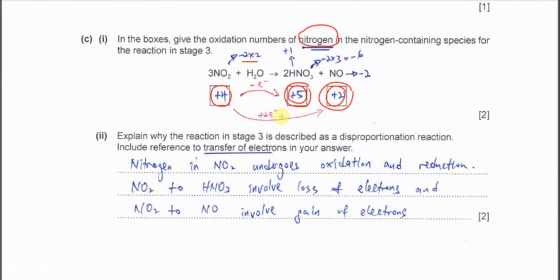+4 to +2 is being reduced because it gains electrons. From +4 to +2.